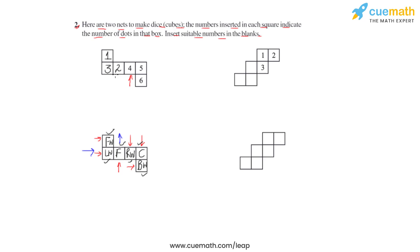This completes the first net. Now let us apply the same concept to the second net. Again considering one face as the floor of the room, with the person facing in this direction — if we fold this particular face of the net it will form the right wall of the room. Folding the two faces here, one will form the front wall and the other will form the ceiling.